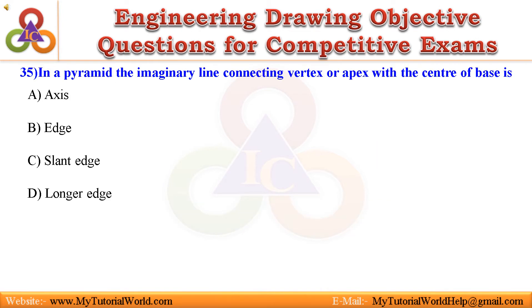Question 35. In a pyramid, the imaginary line connecting vertex or apex with the center of base is: A. Axis, B. Edge, C. Slant edge, D. Longer edge. Answer is: Axis.